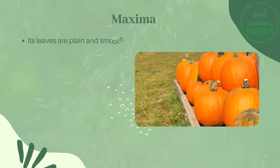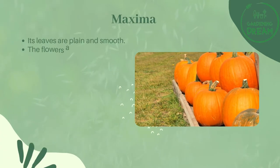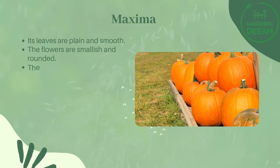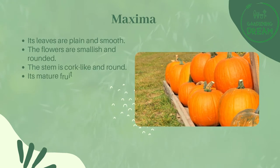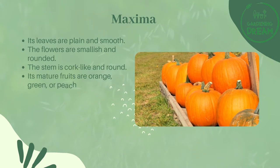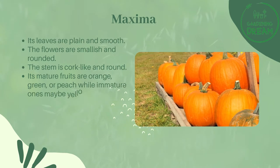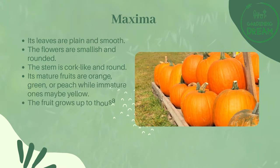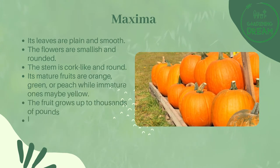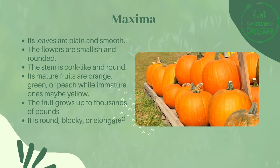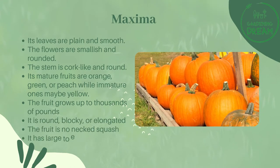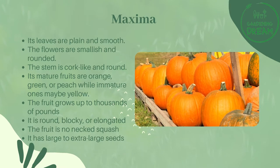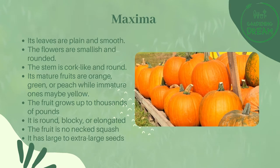Maxima: Its leaves are plain and smooth. The flowers are smallish and rounded. The stem is cork-like and round. Its mature fruits are orange, green, or peach while immature ones may be yellow. The fruit grows up to thousands of pounds. It is round, blocky, or elongated — a no-necked squash. It has large to extra-large seeds.